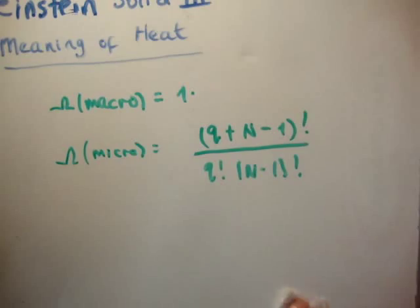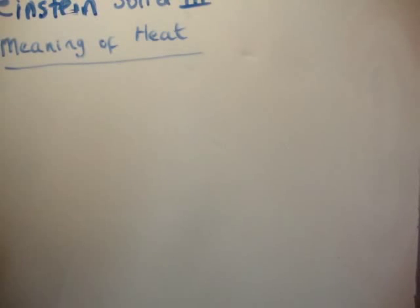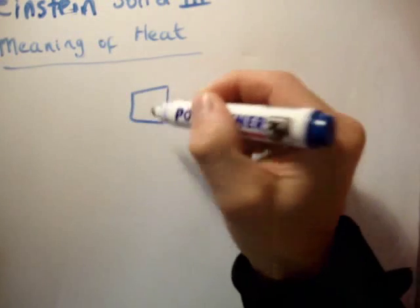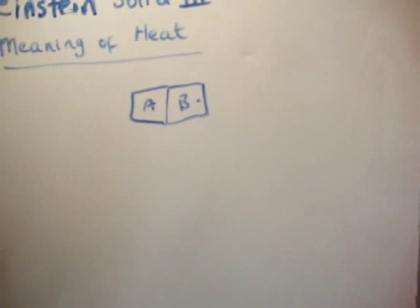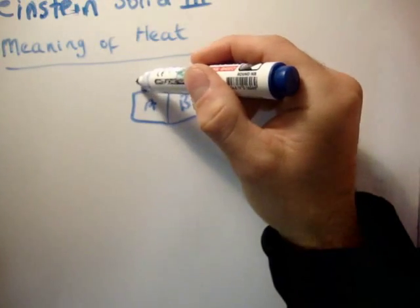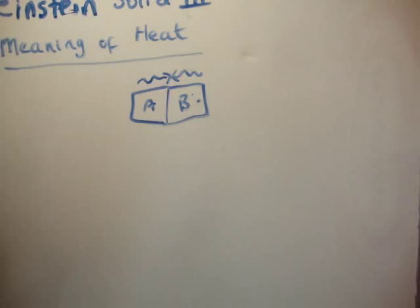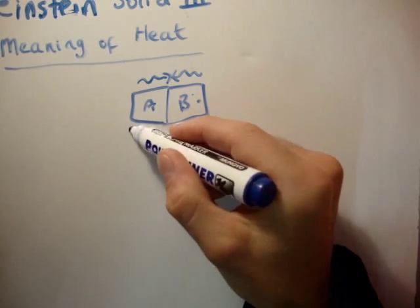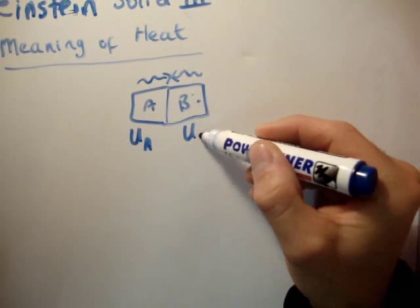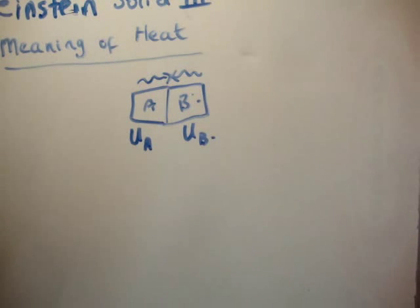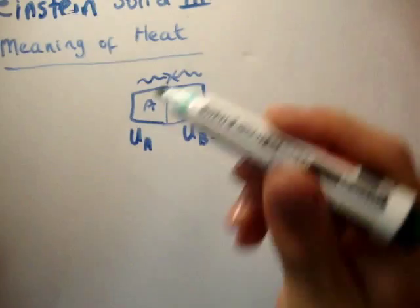That's the revision. Now we're going to discuss two Einstein solids, A and B, that are weakly interacting — they interact just enough so that energy can transfer from B to A or A to B. We'd like to see, if you bring these two solids together with total energies U_A and U_B, what the equilibrium energy will be and what are the multiplicities corresponding to the different possible macrostates of the combined system. By looking at that, we'll see what heat really is. Heat, by definition, is energy in transit.